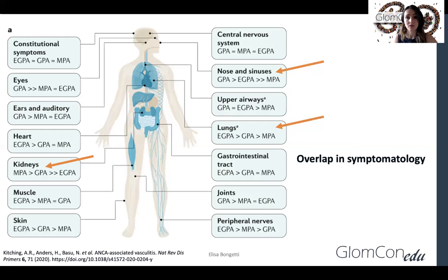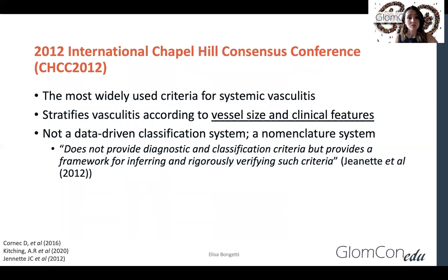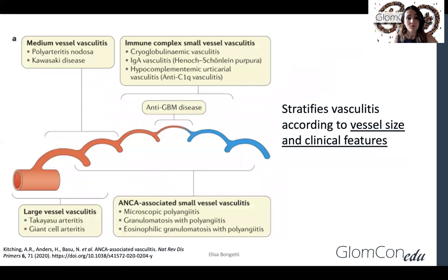We have a clinically based nomenclature system: the 2012 International Chapel Hill Consensus Conference. It is the most widely used criteria for systemic vasculitis and it stratifies vasculitis according to vessel size and clinical features. However, it is technically not a classification system — it is a nomenclature system, which means it's intended to provide a framework for inferring and verifying diagnostic criteria but is not itself intended to be used for diagnostic purposes. ANCA-associated vasculitis involves small vessels.